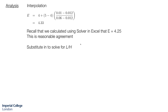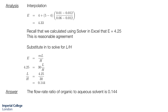I'm going to use the value from the Solver in Excel and substitute that in to solve for our ratio L over H. Using our equation for the extraction factor, E equals 4.25, and the partition coefficient of 30, we cannot solve for L and H independently but we can solve for the ratio L over H. Rearranging that expression, we end up with 0.144. The answer is that the flow rate ratio of organic to aqueous solvent is 0.144.